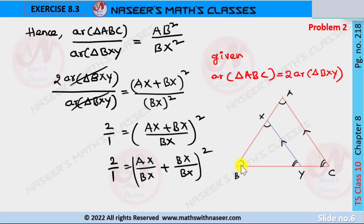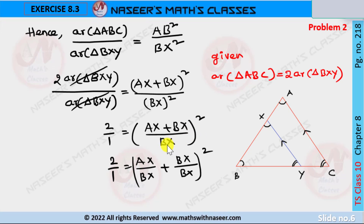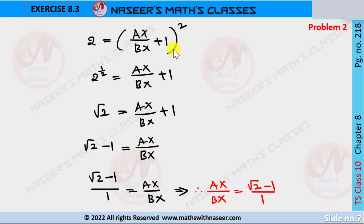In RHS, AB is written as AX plus BX. We replace AB with AX plus BX. Then we can write in RHS: AX plus BX whole squared by BX whole squared. This simplifies to AX plus BX by BX, whole squared. We separate the denominator as AX by BX plus BX by BX. Here we cancel BX over BX to write 1.